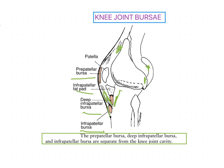So these are all the several small bursae of the knee joint. You have to mention the communicating bursae — that is the main three bursae — and then the non-communicating bursae which are present around the patella. In the next session we are going to discuss about the knee joint function, which includes osteokinematics as well as arthrokinematics. Thank you.